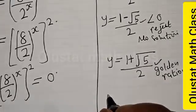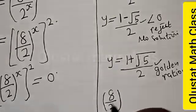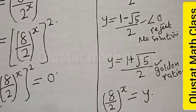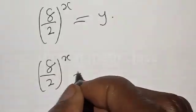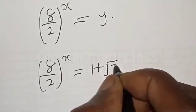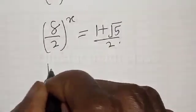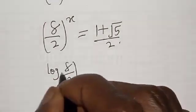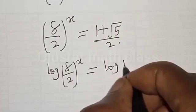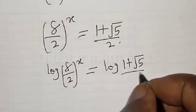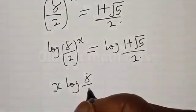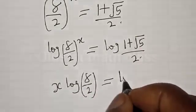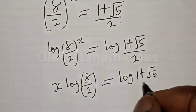Remember that 8 divided by 2 raised to power s is equal to y, and our y is 1 plus square root of 5 divided by 2. So we have 8 divided by 2, raised to power s, is equal to 1 plus square root of 5 divided by 2. Now let's take the log of both sides: log of 8 over 2 raised to power s equals log of 1 plus root 5 divided by 2.